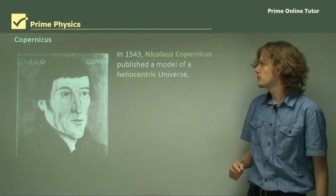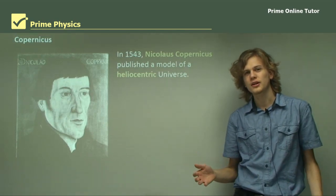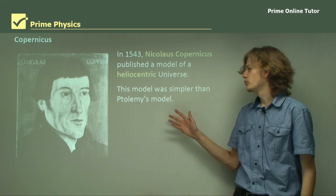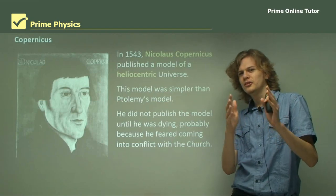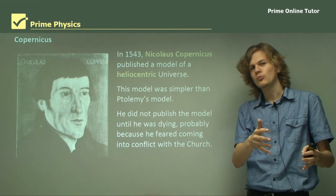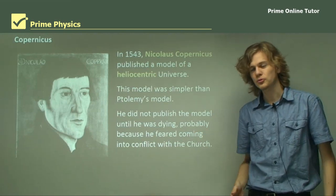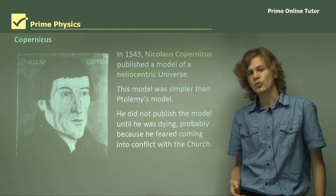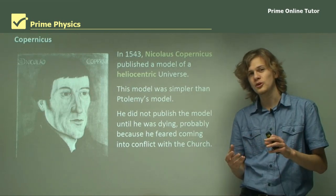So in 1543, Nicholas Copernicus published a heliocentric model of the universe. He used the various observations that had been made over the last few hundred years to conclude that the Earth must be going around the Sun. This model was a lot simpler than Ptolemy's model because it didn't need epicycles. He didn't publish the model until he was right on his deathbed, because he knew the geocentric model had become part of Catholic Church doctrine and he was worried about falling into conflict with the Church. It wasn't until 1543, lying on his deathbed, that he received the first edition print of his book shortly before he died.